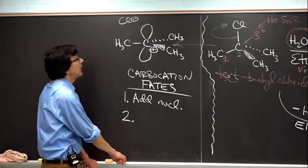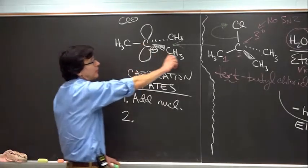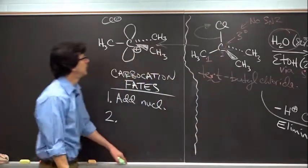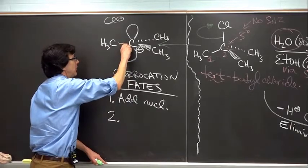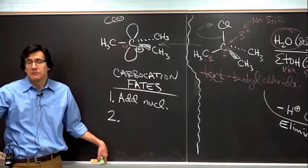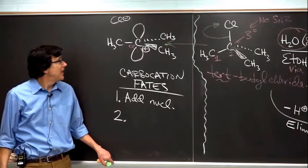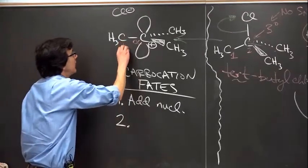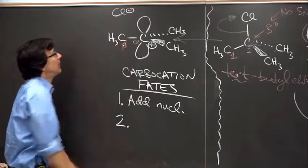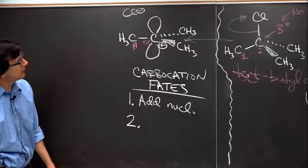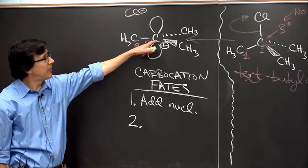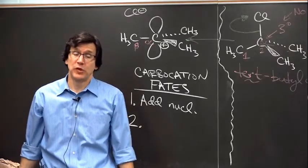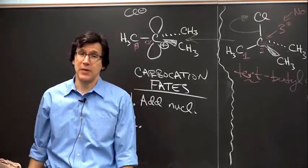And then we have a second carbocation fate. We'll fill in a description of it in just a second. But I just want to introduce you to a little bit of terminology here. This carbon, the carbon to which the leaving group was attached, let's call that the alpha carbon. Alpha is the first letter of the Greek alphabet, of course, and we'll give that priority to this carbon. And then attached to alpha is, guess what, beta. So here's the beta carbon.